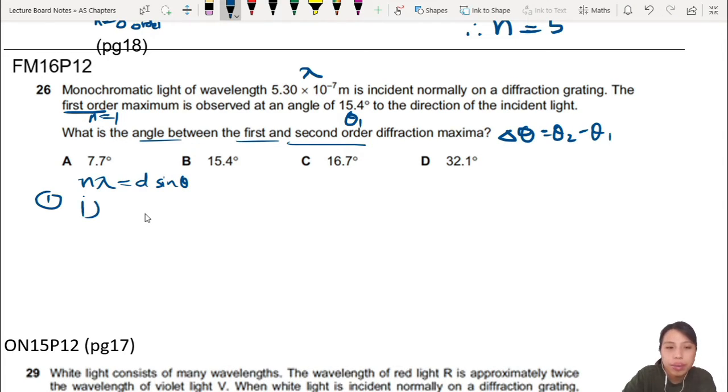So first order, what's the wavelength? 5.3 times 10 negative 7, equals to, what's the diffraction grating? They didn't give us, never mind, put d first. And then your angle sin 15.4. So then you can find a diffraction grating value, which will help you in your second case. So diffraction grating, you should get about 2 times 10 negative 6 meters.